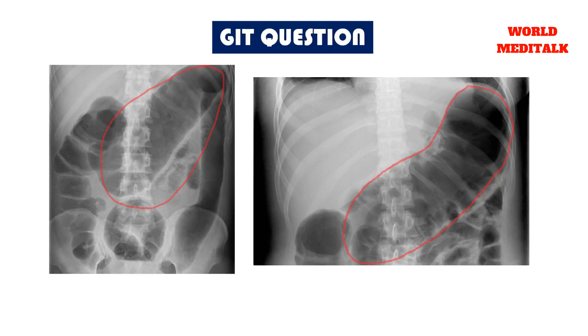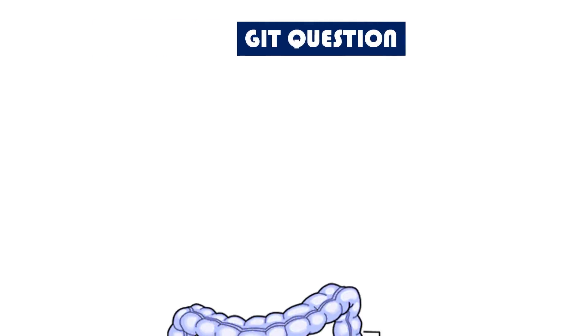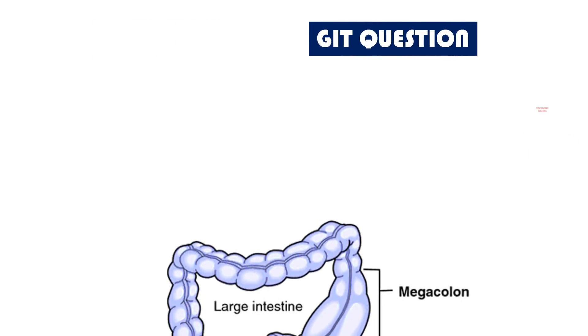There is transmural involvement which causes release of inflammatory mediators, bacterial products, and increased nitric oxide. This altogether contributes to colonic smooth muscle paralysis. Rapid colonic distension ensues, causing thinning of the intestinal wall and making it more prone to perforation.